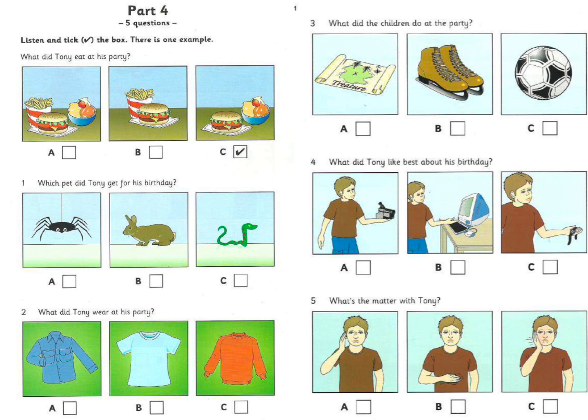3. What did the children do at the party? What did you do at your party? We played some good games. We had to look for treasure. Did you have a map to look at? Yes. And did you play football? No, but after the party, I went skating with my brother.